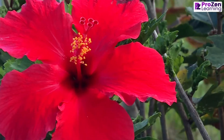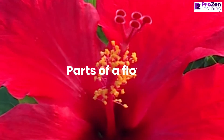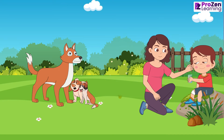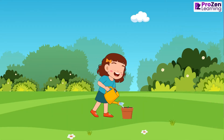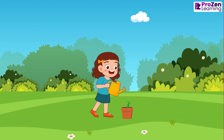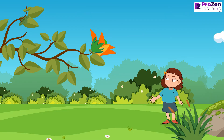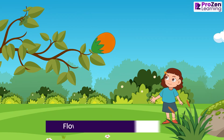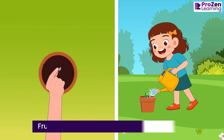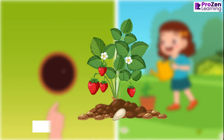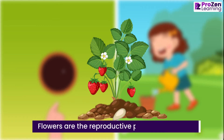Hello students, today we will learn about the parts of a flower. All living things produce more of their own kind by the process of reproduction. Plants too, like all other living things, reproduce. We know that flowers and fruits are parts of a plant. Flowers develop into fruits, and fruits have seeds which give rise to new plants. Flowers are therefore the reproductive parts of a plant.